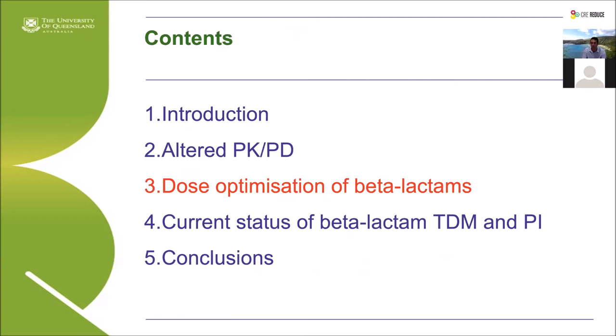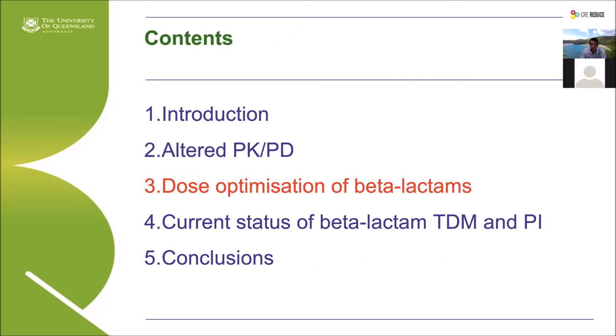What dose optimisation strategies can we use for beta-lactams to maximise efficacy while minimising toxicities — particularly neurotoxicities, which are increasingly being described? It depends on the PK-PD of the drug. The beta-lactams are time-dependent drugs whereby maintaining the concentration above a threshold — most commonly the minimum inhibitory concentration of the infecting pathogen — is associated with maximal bacterial killing. The best approach isn't necessarily high bolus doses, because the magnitude relative to increased time above the MIC doesn't justify it.